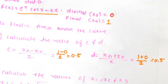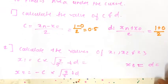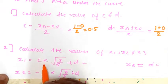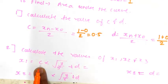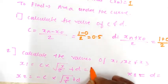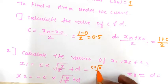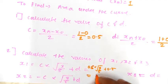Using these values, we have to find out the values of x1, x2, and x3. The formula for x1 is c into under root 3 by 5, plus d. We have the value for c and also the value for d. So putting the values, you will get c into under root 3 by 5, where c is 0.5, plus 0.5. Further simplifying, x1 will be equal to 0.8872.